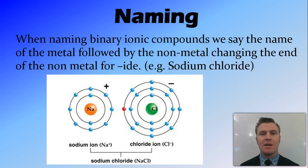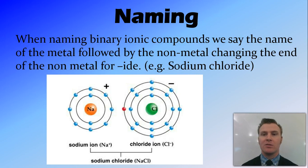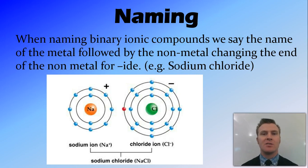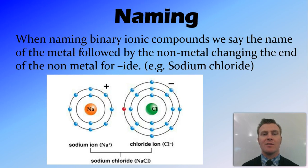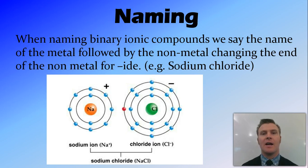Naming this new ionic compound: we say the name of the metal, followed by the name of the non-metal, and we change the non-metal's name to end in -ide. We knock off generally the last few letters and put -ide on the end. So when we have sodium and chlorine, we take the -ine off, change it for -ide, and we have sodium chloride.